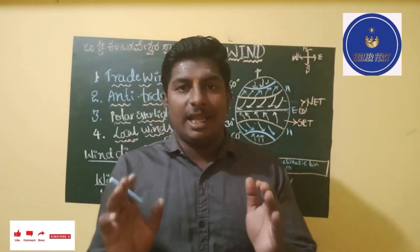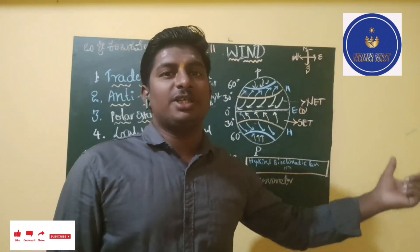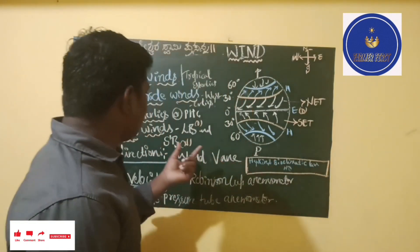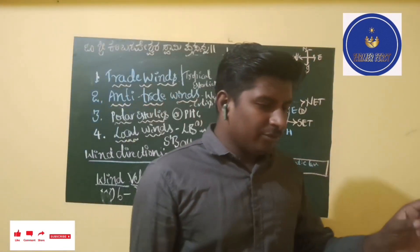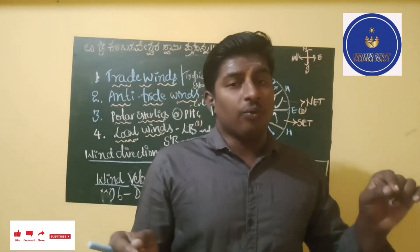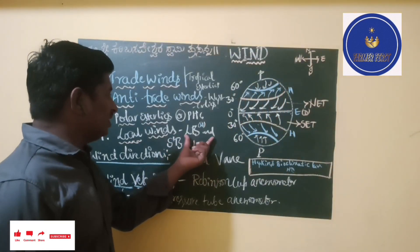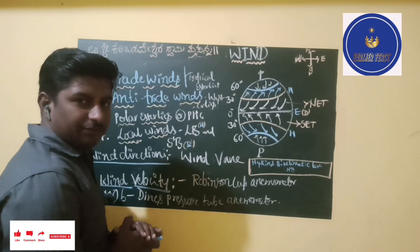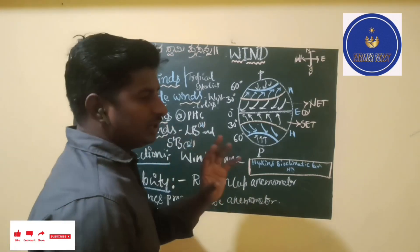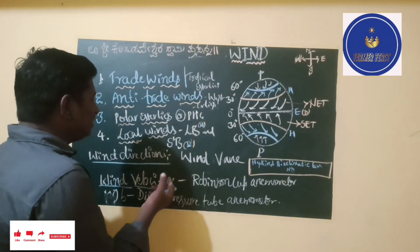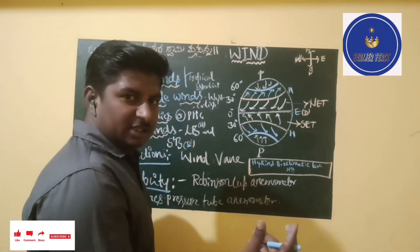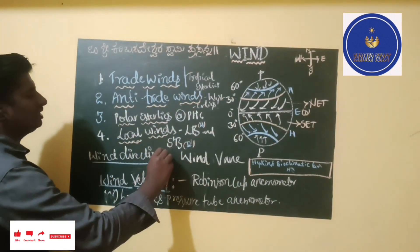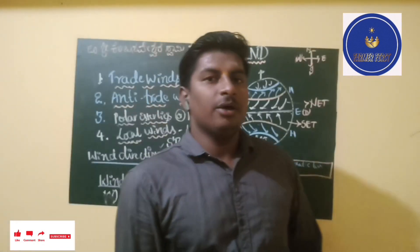Local winds — land breeze and sea breeze — come up repeatedly in examinations. Students try to memorize the directions, but you should not do that. Land breeze is simply when wind moves from land to sea. It takes place at night, when a low pressure belt develops over the sea and high pressure develops on the land surface. Sea breeze takes place in the daytime — since water heats up more slowly than land, low pressure develops over the land and air moves from sea to land.